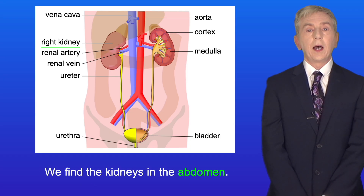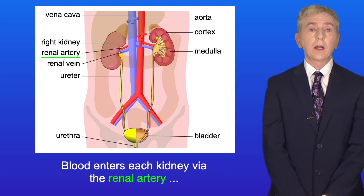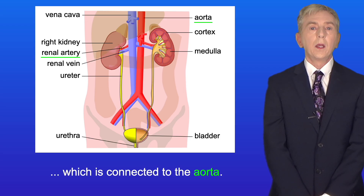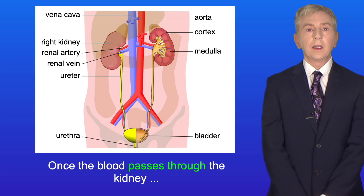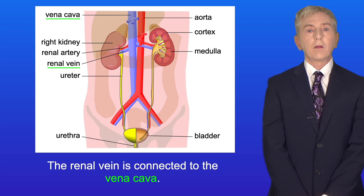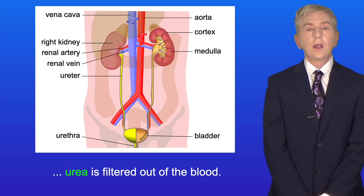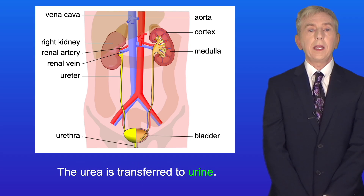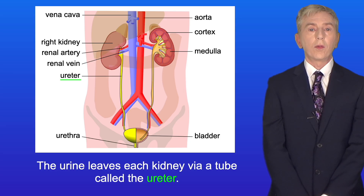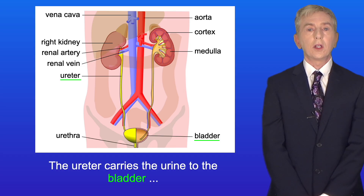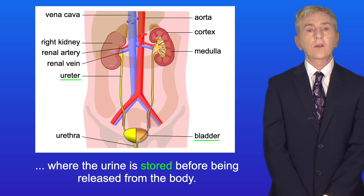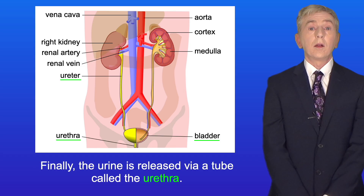Humans have two kidneys and we find the kidneys in the abdomen. Blood enters each kidney via the renal artery, which is connected to the aorta. Once the blood passes through the kidney it leaves via the renal vein, which is connected to the vena cava. As the blood passes through the kidneys, urea is filtered out of the blood and transferred to urine. The urine leaves each kidney via a tube called the ureter, which carries the urine to the bladder where it is stored before being released from the body via a tube called the urethra.